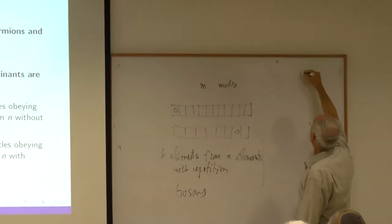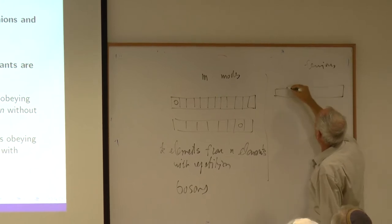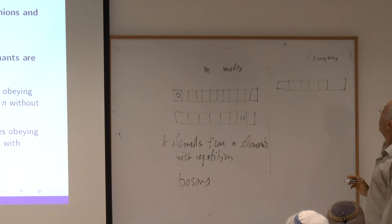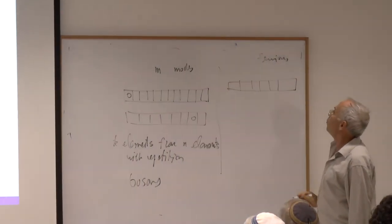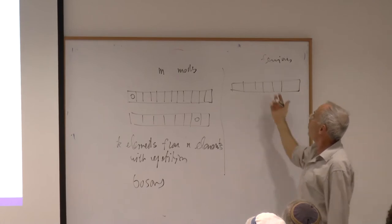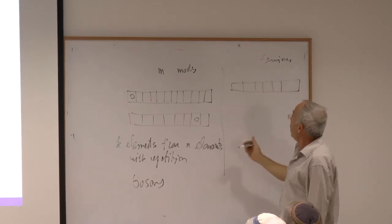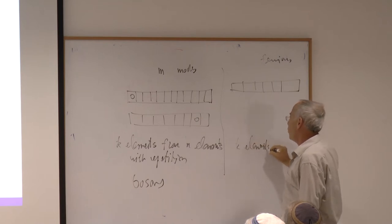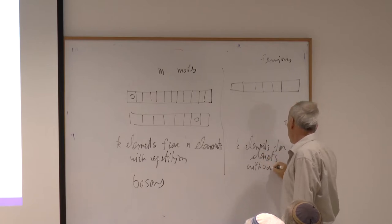Fermions also correspond to choosing one mode per fermion, but two fermions cannot occupy the same place. So fermions correspond to choosing K elements from N elements without repetition.